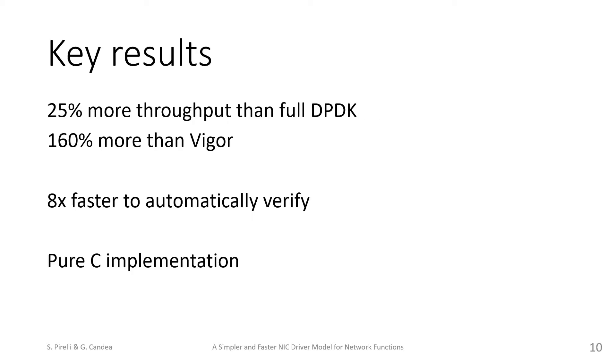Our key results are that our driver allows for 25% more throughput than the full DPDK driver and 160% more throughput than the Vigor subset, while also making network functions 8 times faster to verify than the Vigor subset. Our implementation is in pure C. We do not use inline assembly or compiler built-ins such as vectorized operations.